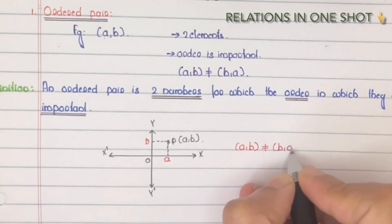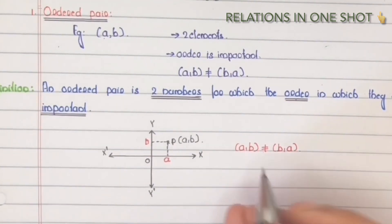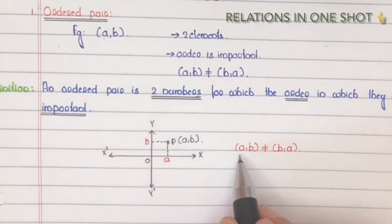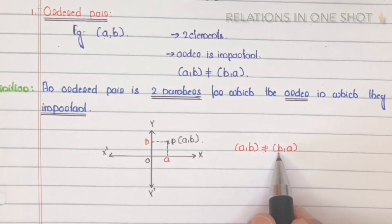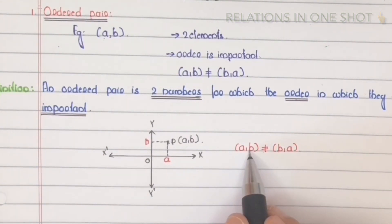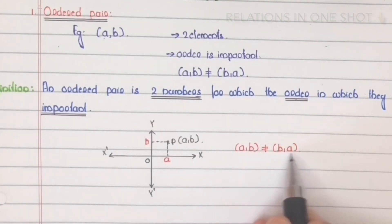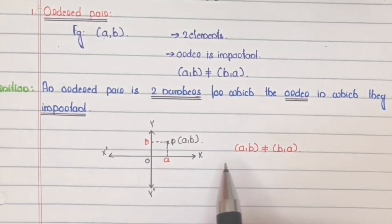AB is not equal to BA. Because the first element A represents the X-coordinate, and the second element B also represents the X-coordinate in (B, A). Same way, the Y-coordinate B and the Y-coordinate A are different when swapped.